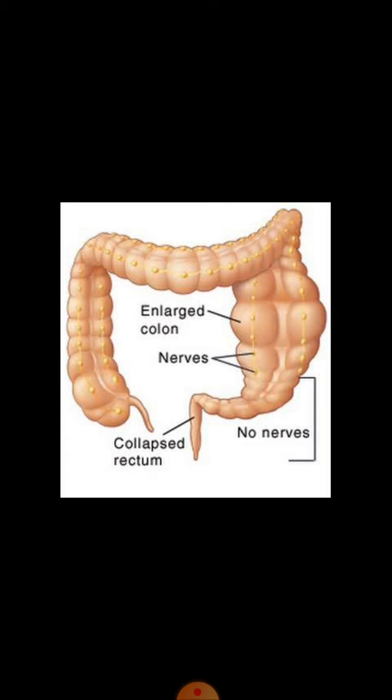Hirschsprung disease also involves genetic mutation. There is a gene called the RET gene, which codes for tyrosine kinase receptors. Additionally, factors such as RET ligand, glial-derived neurotrophic factor, endothelins, and endothelin receptors are responsible for the development of Hirschsprung disease.